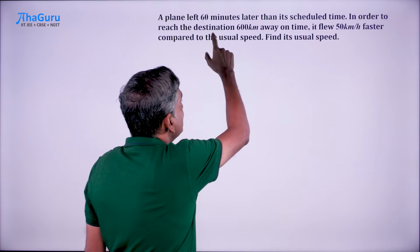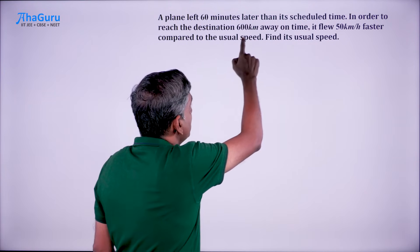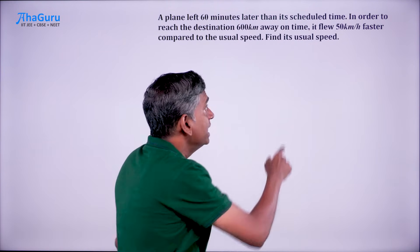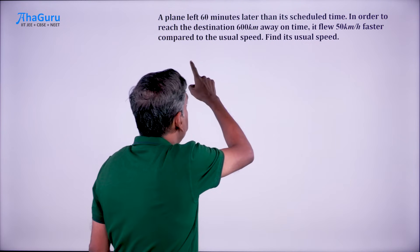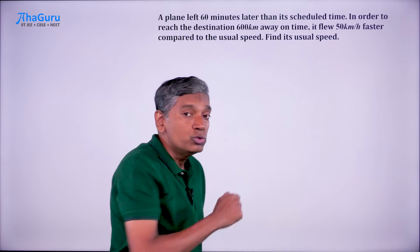A plane left 60 minutes later than its scheduled time. In order to reach the destination 600 kilometers away on time, it flew 50 kilometers per hour faster compared to the usual speed. Find its usual speed is the question.